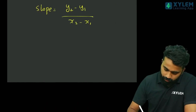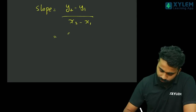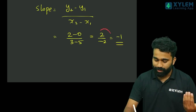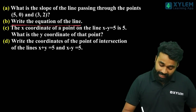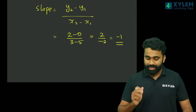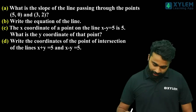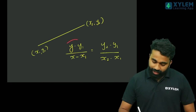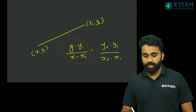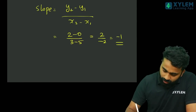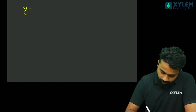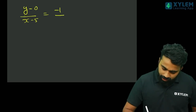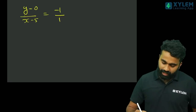Here (x1, y1) and (x2, y2) — correct. As usual method: x1 is 5, y1 is 0; x2 is 3, y2 is 2. So 2 minus 0 by 3 minus 5 equals 2 by minus 2 equals minus 1. So slope equals minus 1.